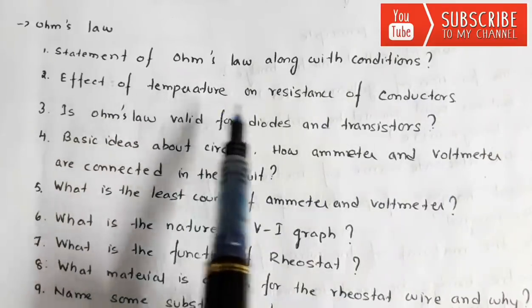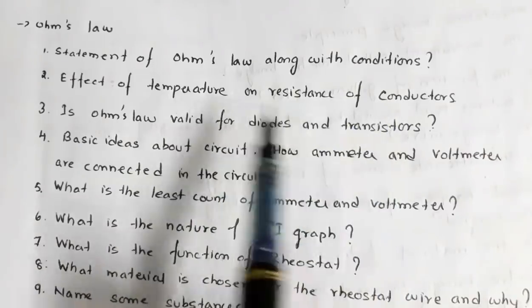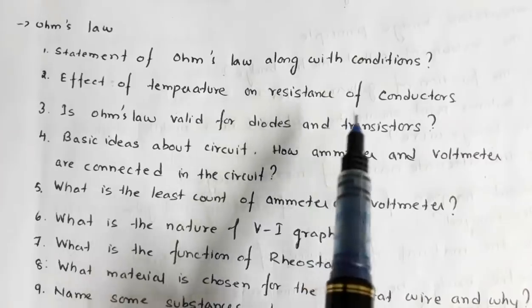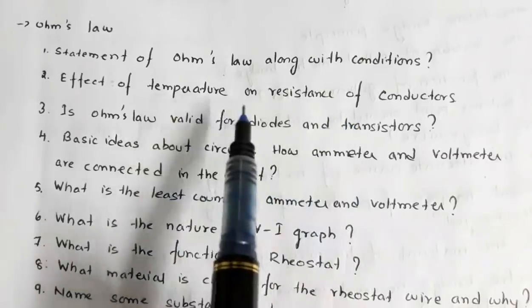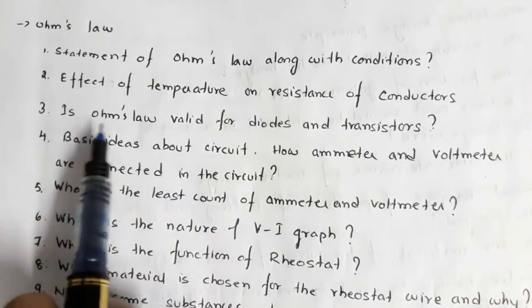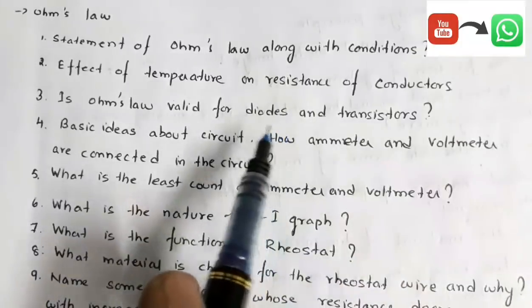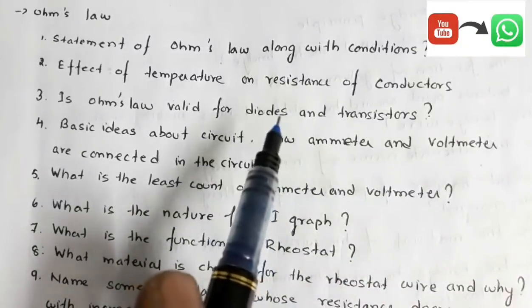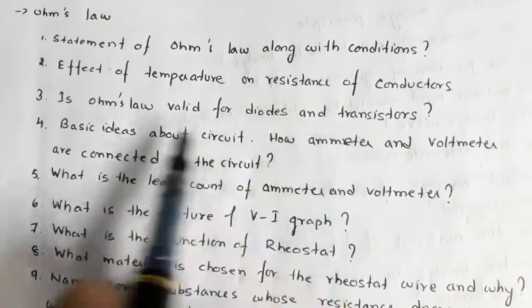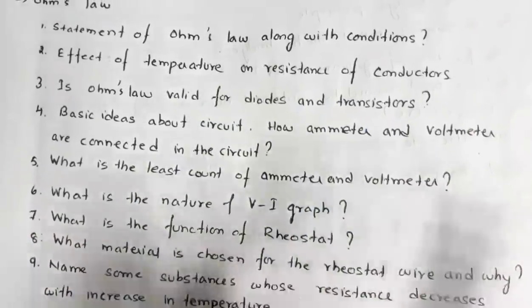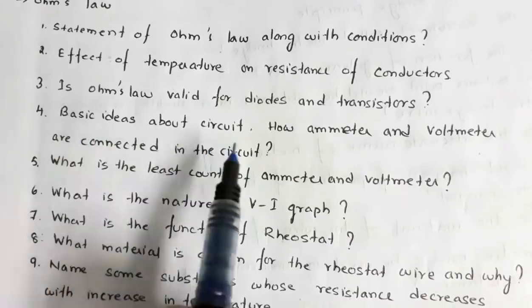What is the effect of temperature on resistance of conductors? For conductors, as you increase the temperature the resistance also increases. For semiconductors, the resistance decreases with increase in temperature. Next: is Ohm's law valid for diodes and transistors? No — Ohm's law is valid only for ohmic conductors. Diodes and transistors are non-ohmic conductors, so for them Ohm's law is not valid.